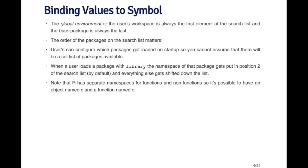One thing to note is that R has separate namespaces for functions and non-functions. It's possible to have an object named C and a function named C. In your global environment there can only be one symbol named C, but you can have a vector named C and that won't necessarily interfere with the function that already exists also named C.